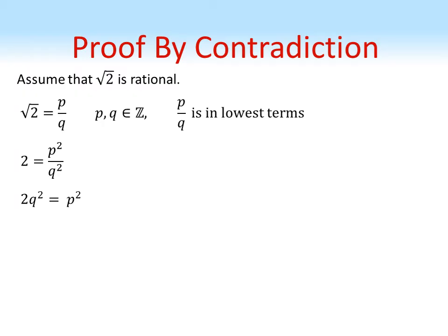Now as p squared is now a multiple of 2 it must be an even number. If p squared is even, p must also be even. So we can replace p with 2n where n is also a whole number.